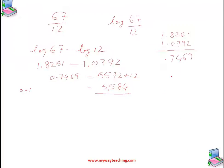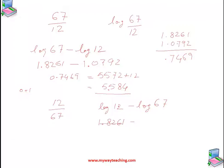Now we will take another example: 12 divided by 67. Again, we write this as log 12 minus log 67. Using the same values as before, log 12 is 1.0792 and log 67 is 1.8261. So we calculate 1.0792 minus 1.8261.